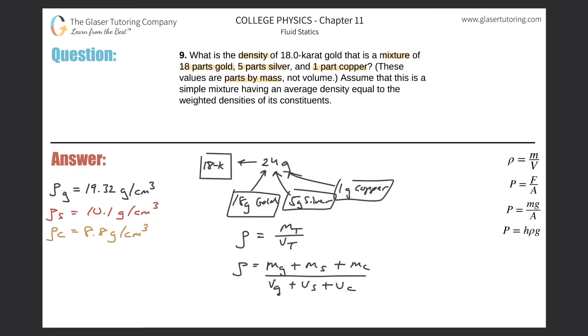Okay, now we know these pieces. We know the gold is 18 grams, silver is 5 grams, copper is 1 gram, but we don't know the volume. But remember, we do know the densities of each, and therefore, if I know the density of gold, that means I can find the volume of gold just by doing a cross multiplication, meaning that the volume of gold is equal to the mass of gold divided by the density of gold.